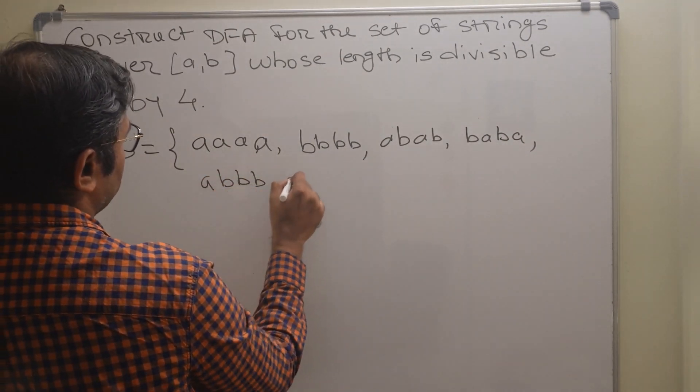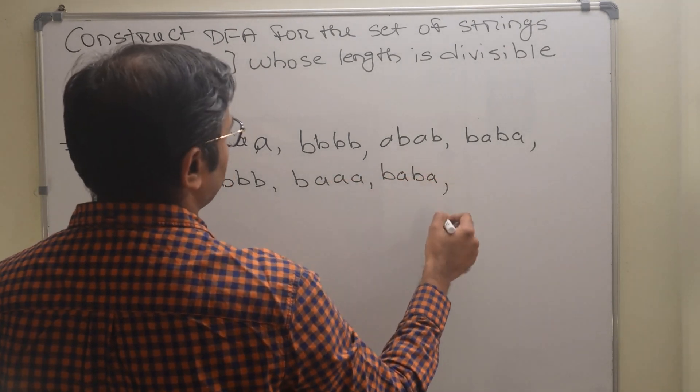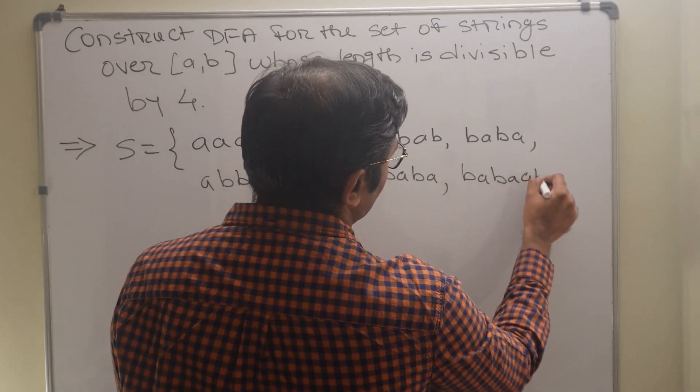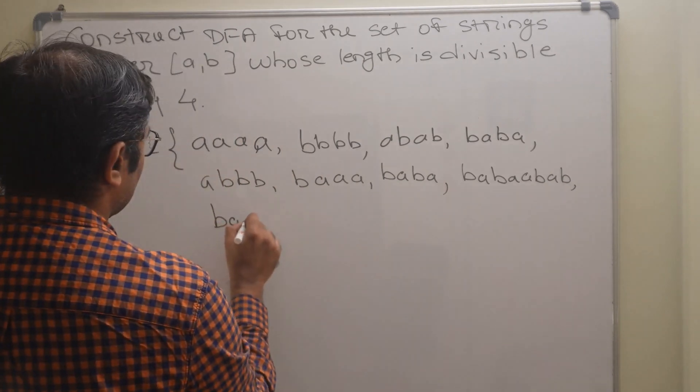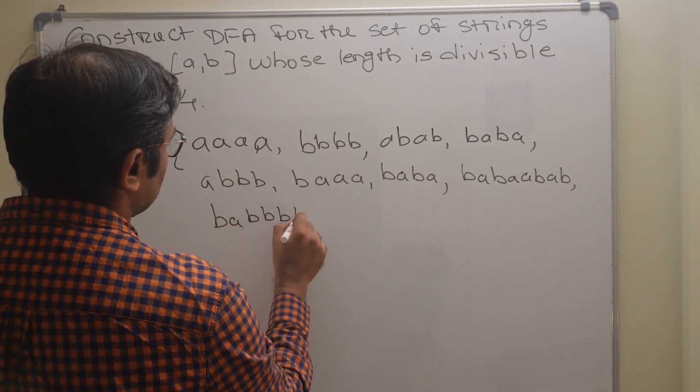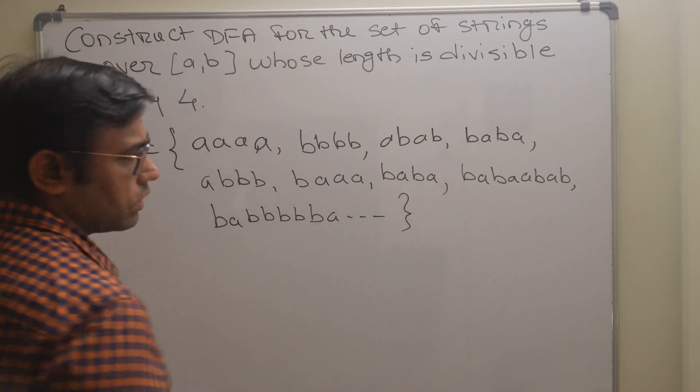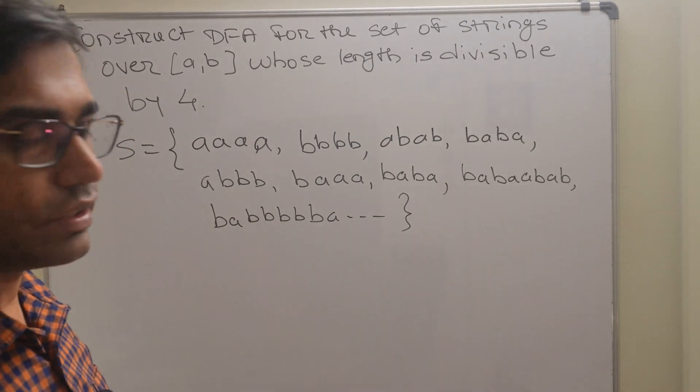b triple a is also valid, baba is also valid, babab, baba. So all the strings which are multiples of four are valid.